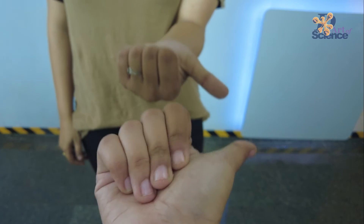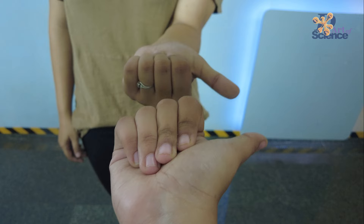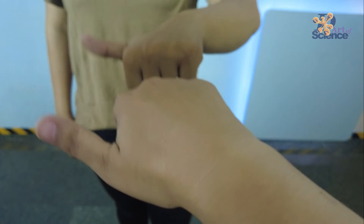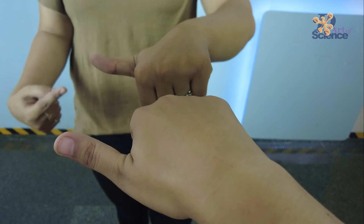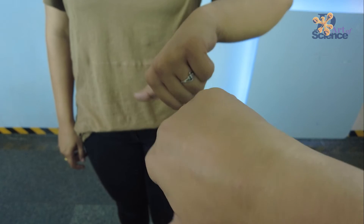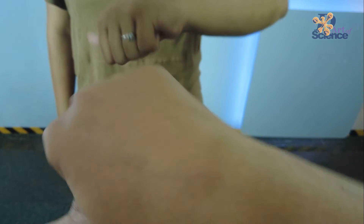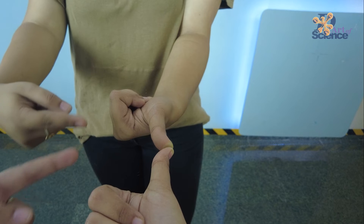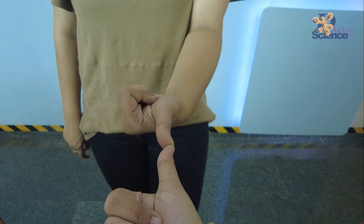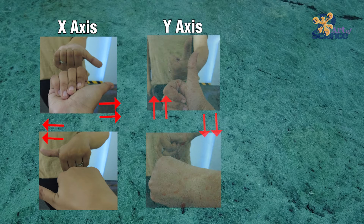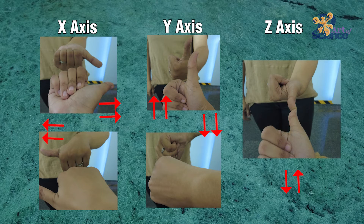To understand which axis the mirror flips images in, we can perform a simple experiment — all you need is a mirror and your thumbs. First, point your thumb to the right side along the X axis. Notice that the mirror image also points the thumb in the same direction. Next, point it to your left side — again, the mirror image points it in the same direction. This same applies when you point your thumb upwards and downwards. Now point your thumb towards the mirror along the Z axis. Notice how this time, the mirror image points the thumb in the opposite direction, which is towards you. So that means the mirror does not flip images vertically or horizontally, but instead it flips images in the Z axis.